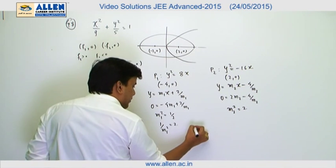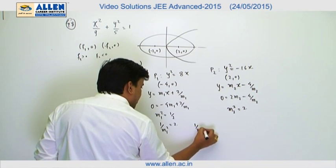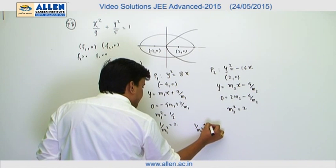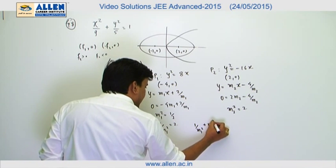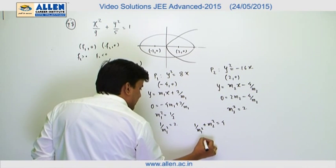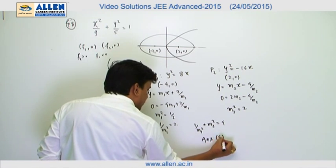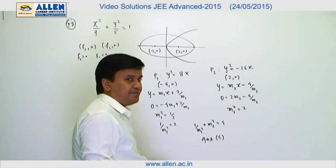According to the question, we have to find 1/m1² + m2², which equals 2 + 2 = 4. Hence, the answer for this question is 4.